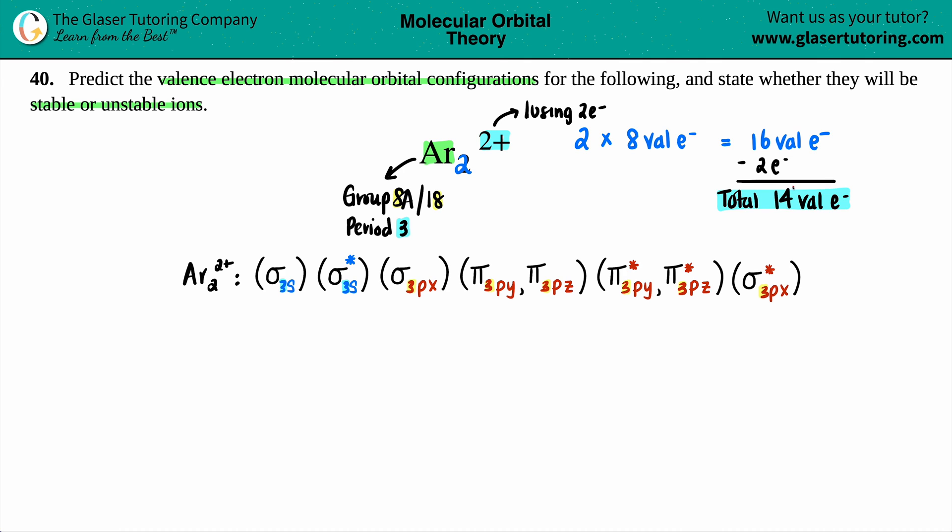Now comes the fun part where we have to take my 14 valence electrons and distribute them between these molecular orbitals. The way that I wrote them is from the least amount of energy to the greatest amount of energy. As you get higher and higher in energy, you're becoming more unstable, so you always want to drop in your electrons at the beginning and then keep gradually increasing until you reach your total, in this case 14. For each molecular orbital, you're only allowed a max of two electrons.